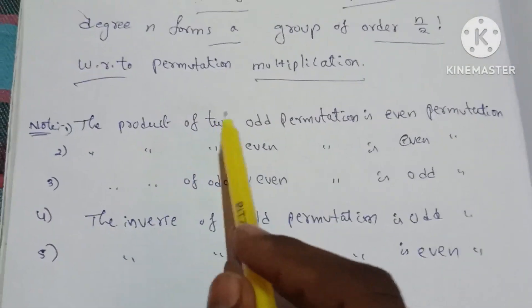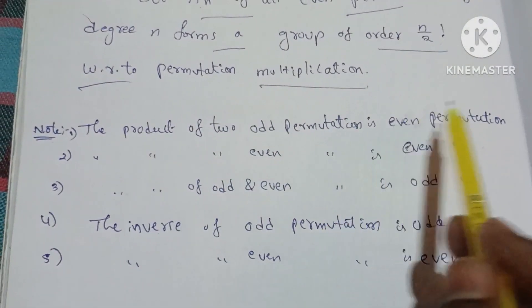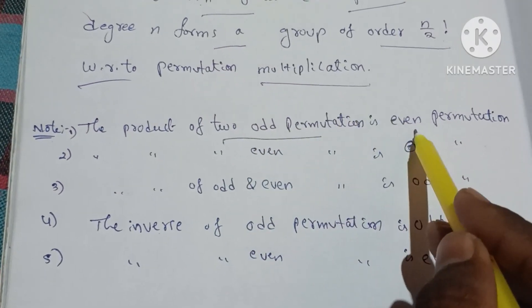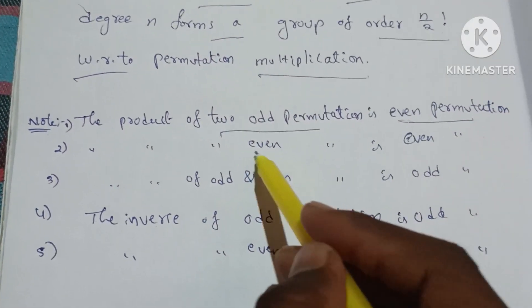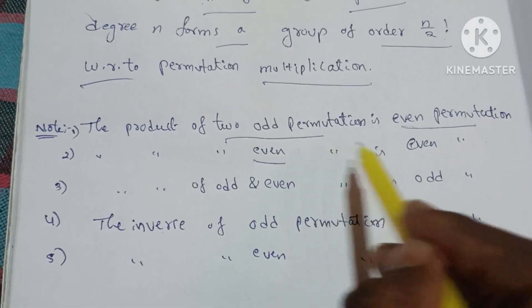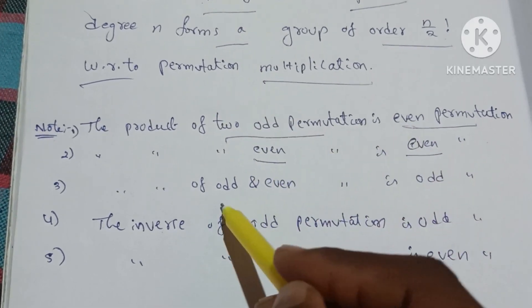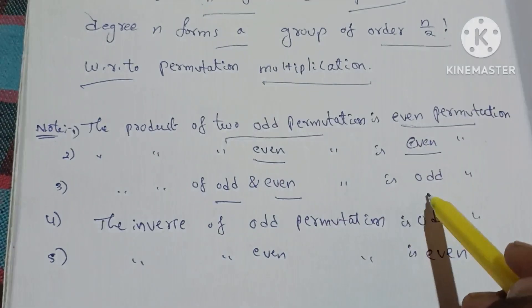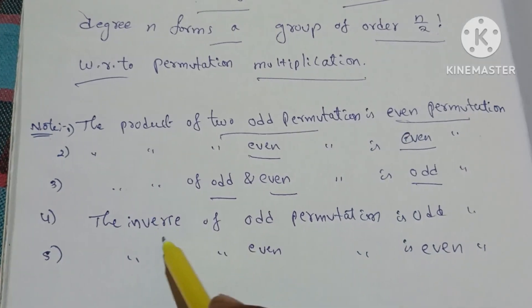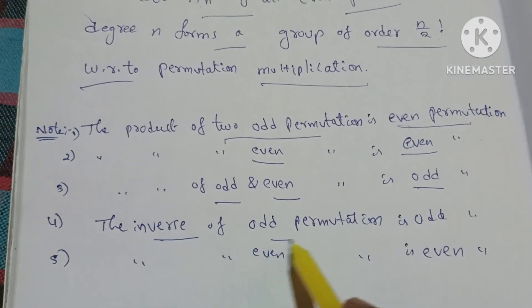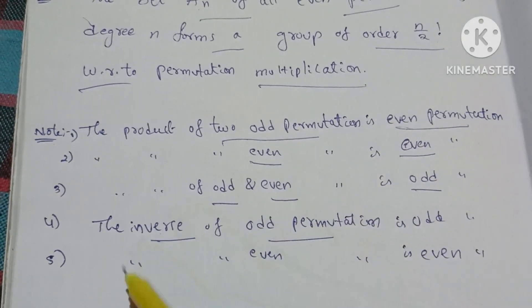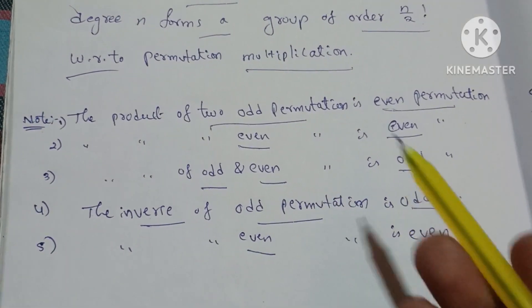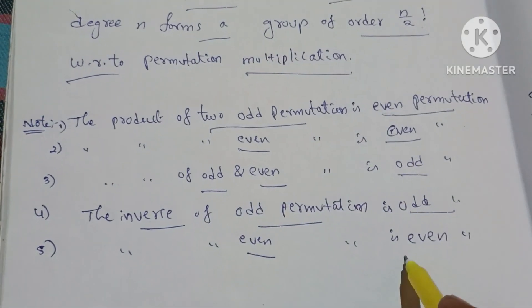Key points: the product of two odd permutations is even. Two odd permutations multiplied give an even permutation. Two even permutations multiplied give an even permutation. One odd and one even permutation multiplied give an odd permutation. The inverse of an odd permutation is an odd permutation.